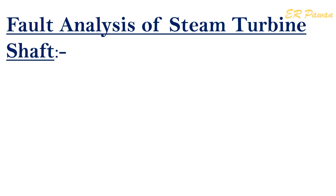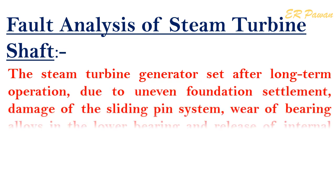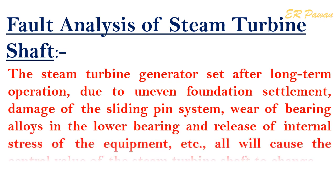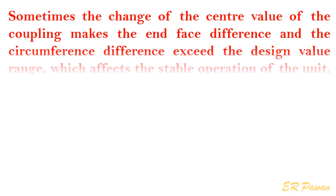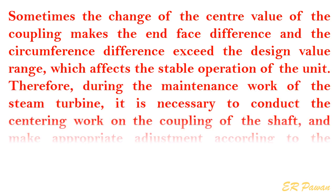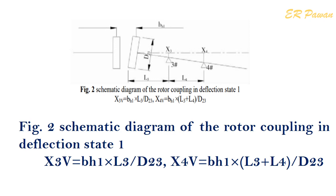Fault analysis of steam turbine shaft: After long-term operation, due to uneven foundation settlement, damage of the sliding pin system, wear of bearing alloys in the lower bearing, and release of internal stress of the equipment, the central value of the steam turbine shaft will change. Sometimes the change of the center value of the coupling makes the end-face difference and the circumference difference exceed the design value range, which affects the stable operation of the unit. Therefore, during maintenance, it is necessary to conduct centering work on the coupling of the shaft and make appropriate adjustments so that the center value deviation is within the design value range. There are three main cases in which the rotor coupling is deflected. As shown in Fig. 2, the center line of the rotor is not in a straight line, but the centers of the two back wheels just coincide.